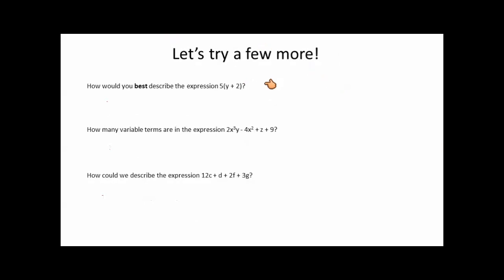So let's look at some examples. How would you best describe the expression 5 times y plus 2? Number 5 is a constant. There's one term, right, because we're multiplying these two things together. So we might say something like the product of a constant factor of 5, so here's our constant. Product means multiplication, and a factor with the sum of two terms. So constant of 5 times another factor, and this factor is the sum of two terms.